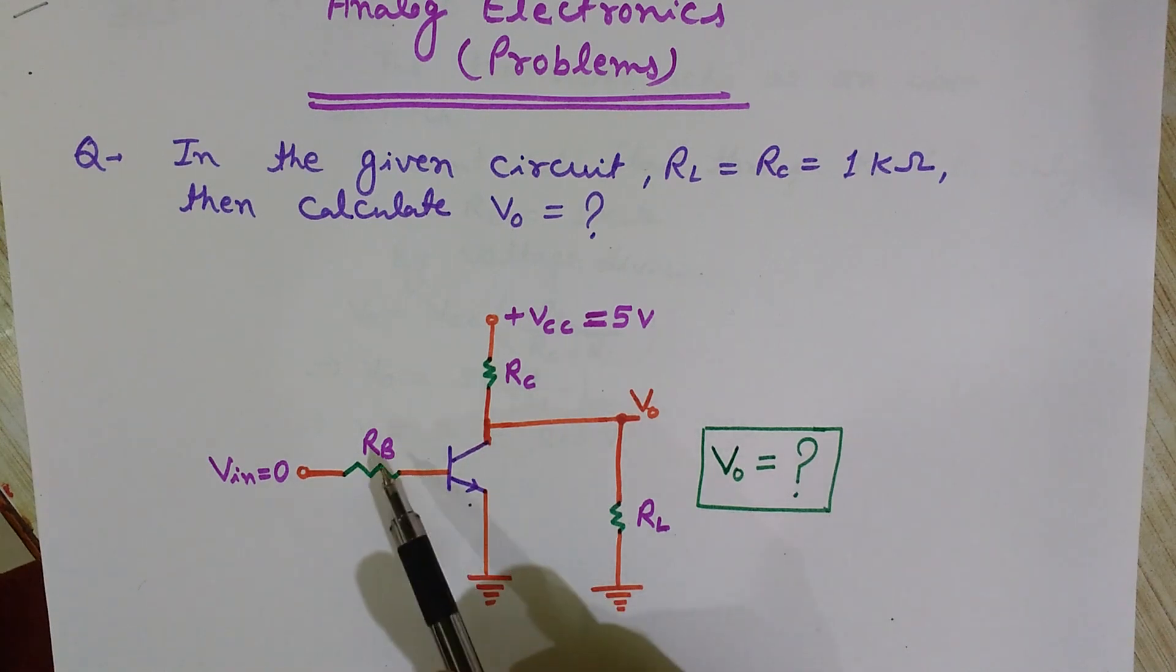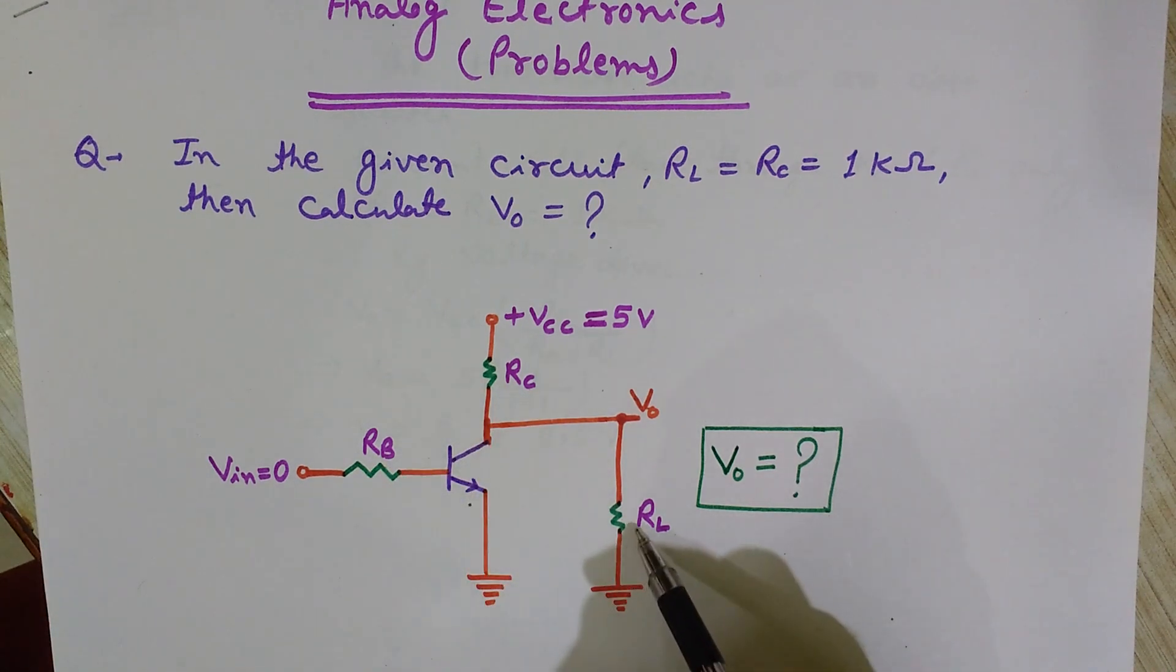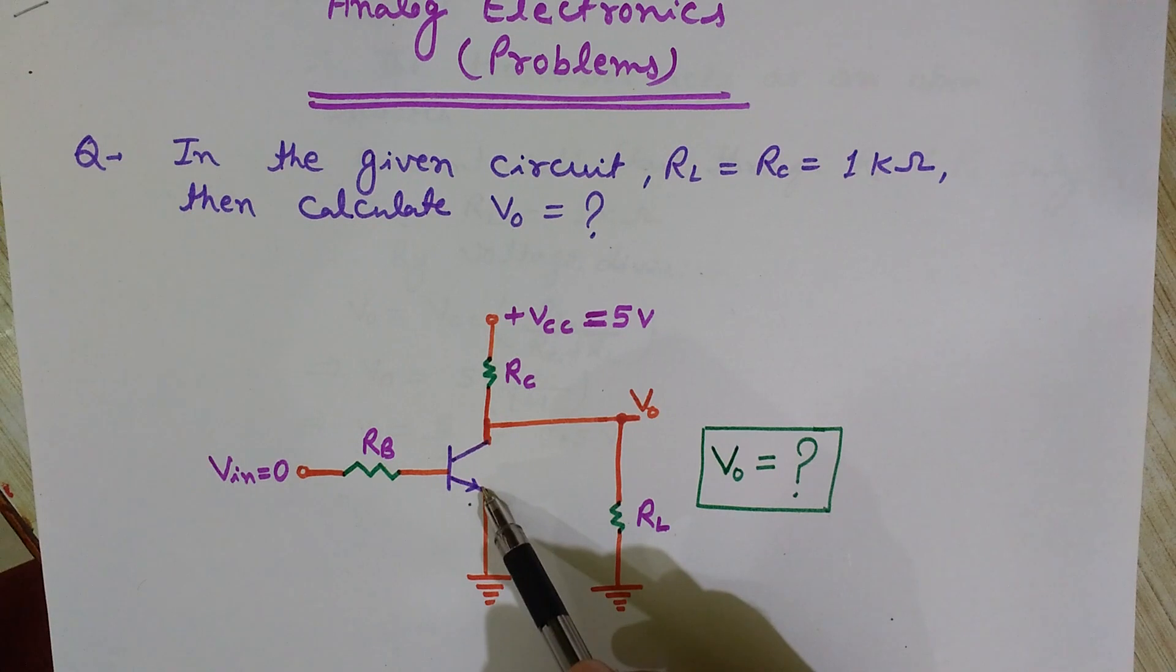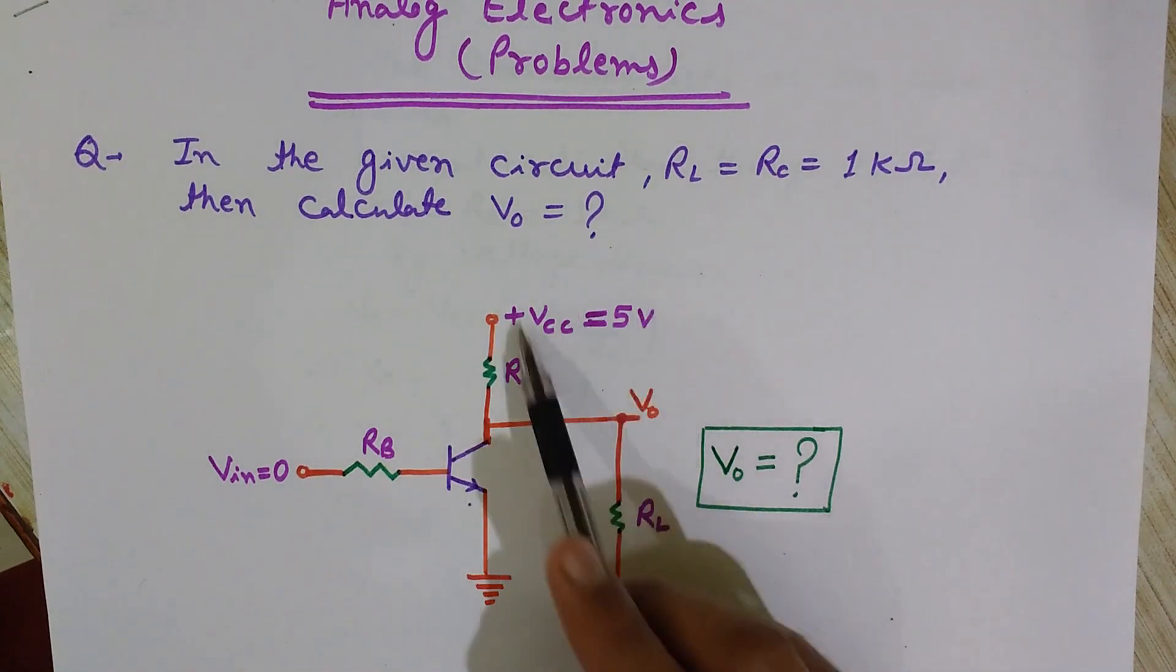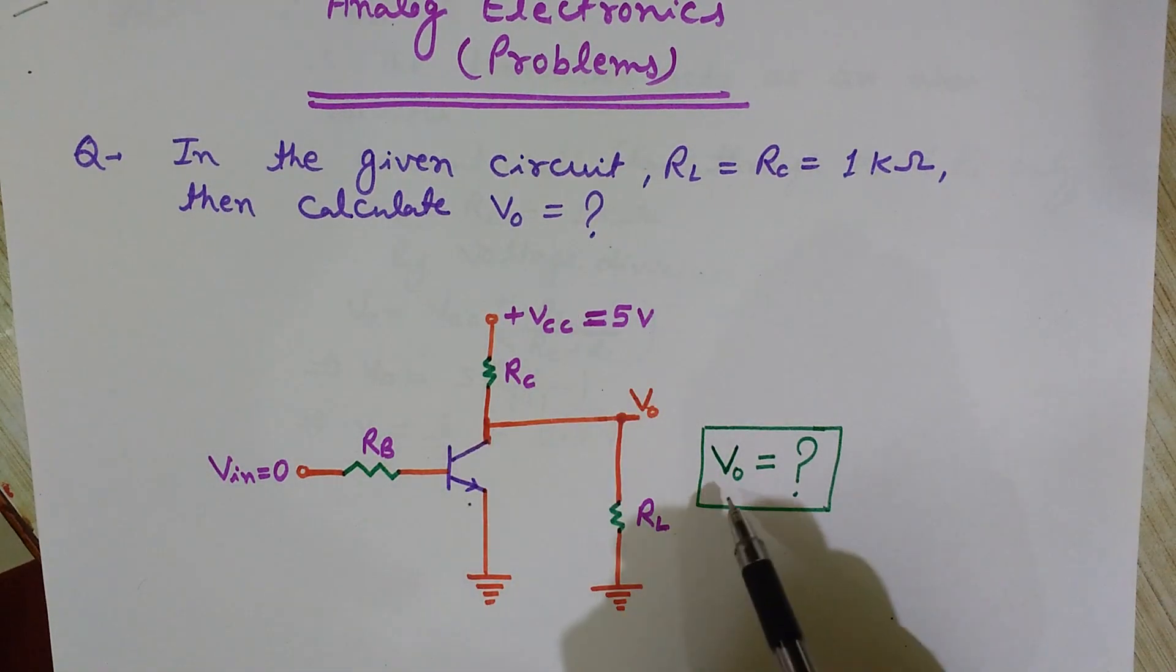This is RB, RC, and RL. Here is the emitter branch, emitter side, this is the collector side, and here is the base side. And VCC is applied, 5 volts here. Let's calculate V0.